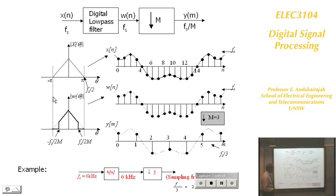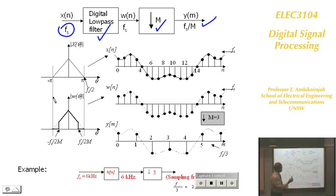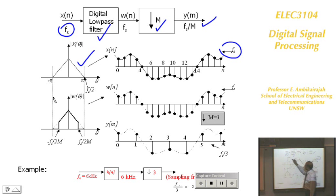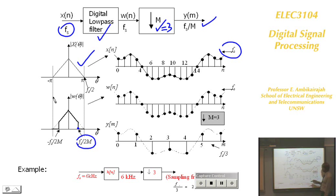Here is a schematic example: signal comes in, passes through a digital low-pass filter, then is downsampled, giving a reduced output signal. Looking at the spectrum with M equal to 3: the cutoff frequency of the digital filter must be Fs/(2M), since the output sampling frequency will be Fs/M, and the filter must be half of that.